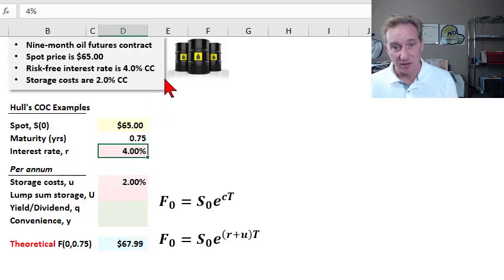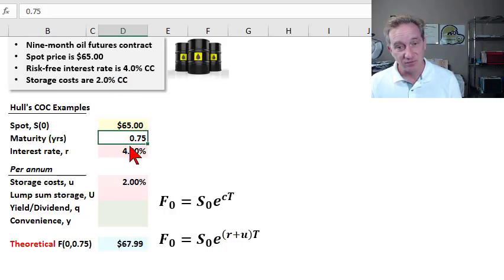I'm denoting that with a small r. And further, continuously compounded, because that allows us the elegance of putting the r in the exponent. Similarly, my storage cost is going to be 2% per annum continuously compounded, which we can interpret as a storage cost that is 2% as a constant ratio or proportion of the commodity spot price. So I have my assumptions here in the cost of carry model.